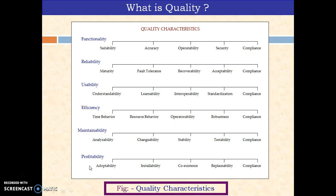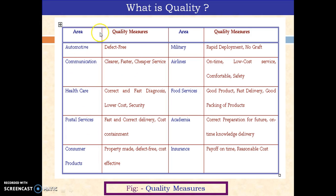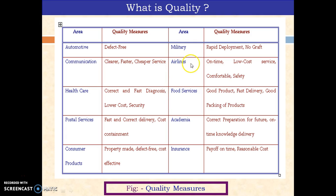If you apply that concept for different areas — for automotive, the quality characteristics could be that it should be defect-free. As far as communication is concerned, the process quality characteristics could be that it should be very clear, faster, and cheaper. In healthcare, quality characteristics could be correct and fast diagnosis. In the field of airlines, it could be on-time, low-cost service, comfortable and safe journey. As far as military operations are concerned, operation quality can be defined in terms of rapid deployment and no grid. For full services: good product, faster delivery, good packing, etc.